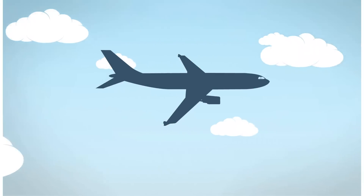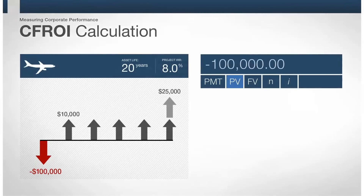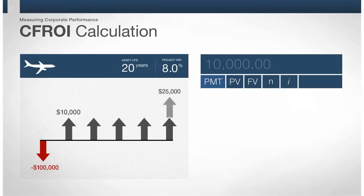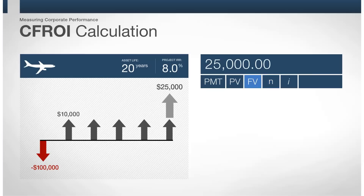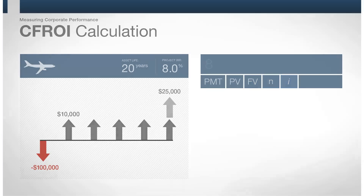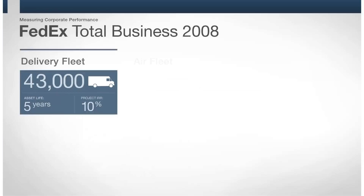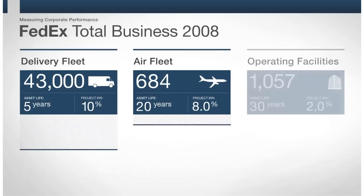Now let's assume we expand our operations with the purchase of a plane. We pay $100,000 for the plane. The deliveries it makes produce $10,000 of cash flow each year. After 20 years, we sell the plane for $25,000. As a result, the plane's IRR is 8%.